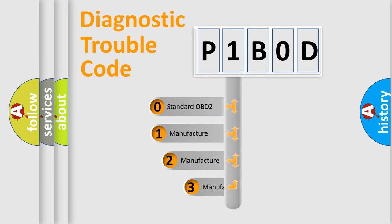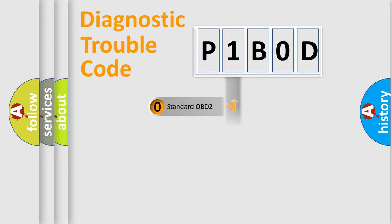If the second character is expressed as zero, it is a standardized error. In the case of numbers 1, 2, or 3, it is a more specific expression of the car-specific error.